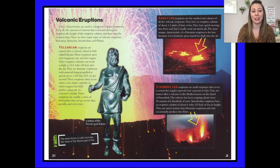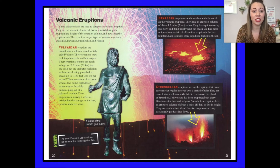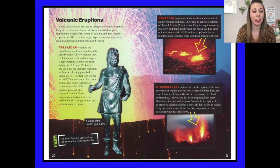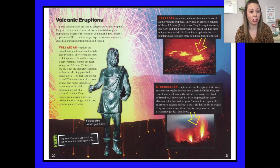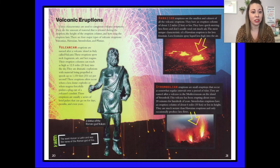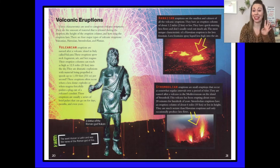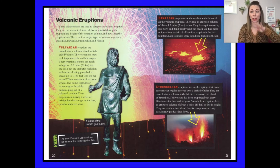So we're going to continue reading Volcanic Eruptions. Three characteristics are used to categorize volcanic eruptions: the amount of material released during the eruption, the height of the eruption column, and how long the eruption lasts. There are four major types of volcanic eruptions — Volcanian, Hawaiian, Strombolian, and Plinian. Now it's going to break down those four different types for us. See how they've organized this text?